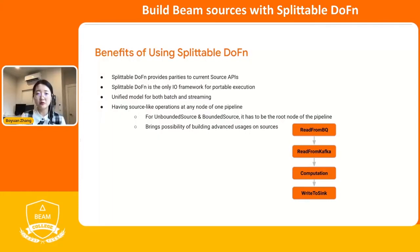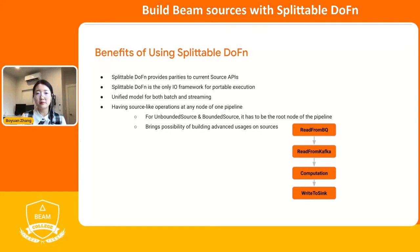Lastly, the most powerful point for Splittable DoFn is that bounded source and unbounded source have to be the root node of the pipeline, but Splittable DoFn is a DoFn — it can be any node of the pipeline. That means you can have source-like operations at any position in the pipeline. So imagine one application where we store our topic partitions in a BigQuery table: the pipeline can first read from the BigQuery table to get the topic partition, then have the Kafka source read from that topic partition and emit records.